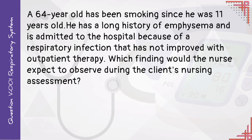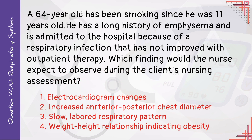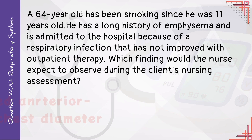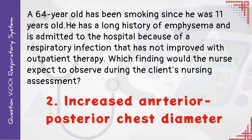A 64-year-old has been smoking since he was 11 years old. He has a long history of emphysema and is admitted to the hospital because of a respiratory infection that does not improve without inpatient therapy. Which finding would the nurse expect to observe during the nursing assessment? One: electrocardiogram changes. Two: increased anterior-posterior chest diameter. Three: slow labored respiratory pattern. Four: weight-height relationship indicating obesity. Answer number two: an increased anterior-posterior chest diameter, commonly referred to as barrel chest, is seen in clients with emphysema as a result of chronic hyperinflation of the lungs.